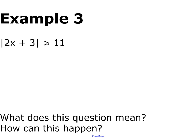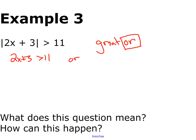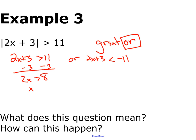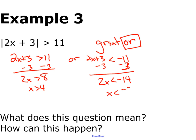Example 3. 2x plus 3 is greater than 11. It's a greater than, which means it's an or question. Do it exactly the same way: 2x plus 3 is greater than 11, or 2x plus 3 — now you flip the inequality — is less than negative 11. Subtracting 3 from both sides: 2x is greater than 8; divide by 2, x is greater than 4. Subtracting 3 from the other side gives 2x is less than negative 14; divide by 2, x is less than negative 7. So your options are x is greater than 4 or x is less than negative 7.